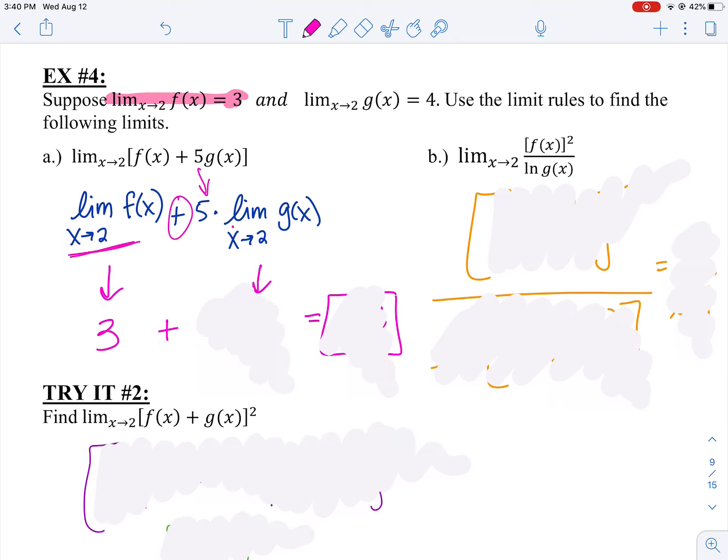And what is the limit as X approaches two of G(X)? Well, it says from my problem that the limit as X approaches two of G(X) is four. So I can plug in a four there and then make sure I multiply it by the five. Four times five is 20 and 20 plus three is 23. So that means my answer for the limit as X approaches two of that big old problem is just 23.